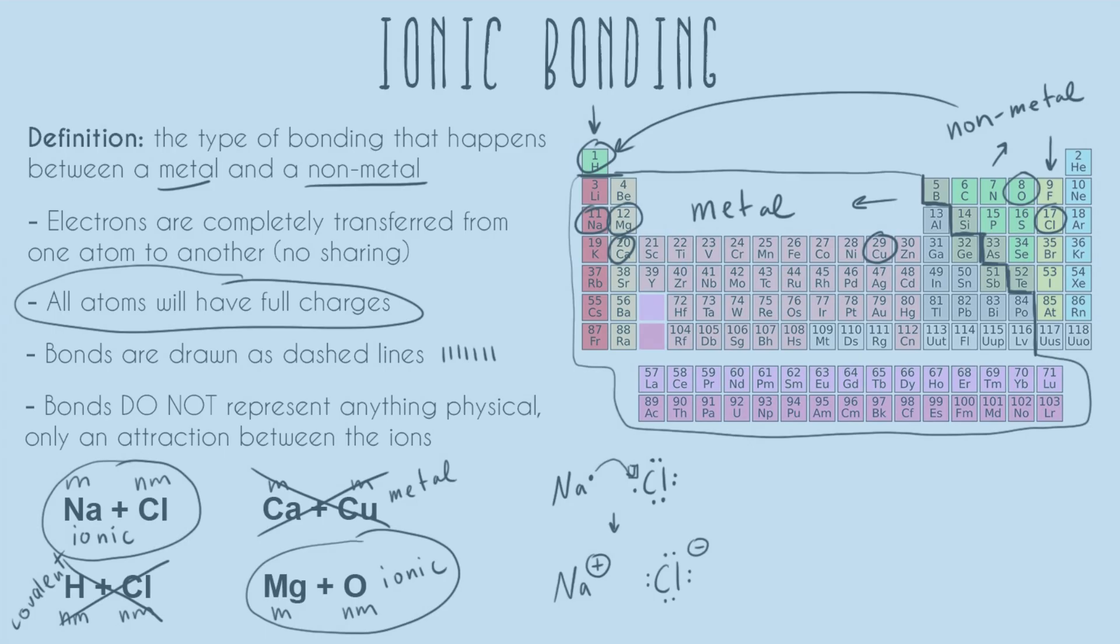And so now, because opposite charges are attracted to each other, that's what keeps these two ions together. So that's how we represent it with these dashes. So because one is positive and one is negative, they're attracted to each other. And so we show that with dashed lines.